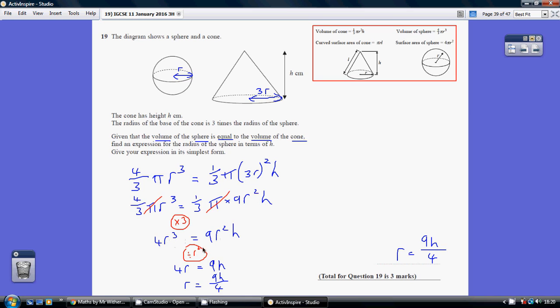We can then divide through by R squared. So we get four R equals nine H. And dividing by four, R equals nine H over four.